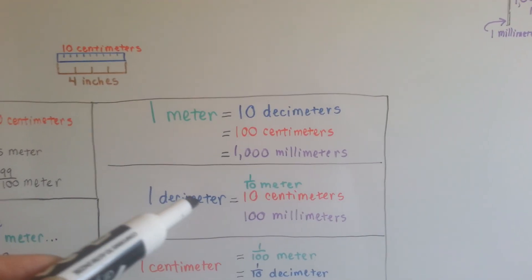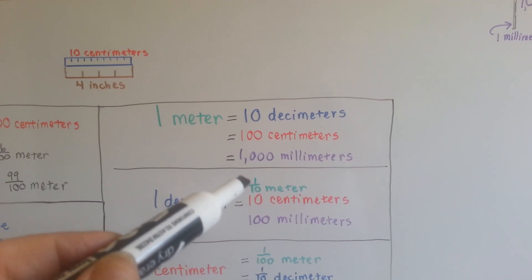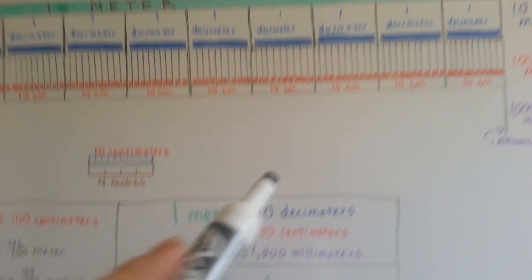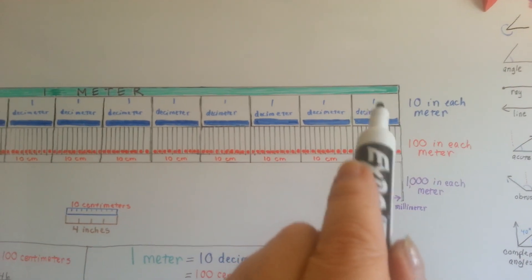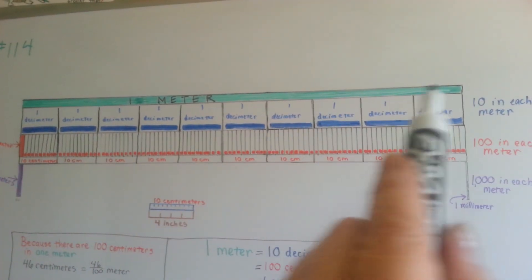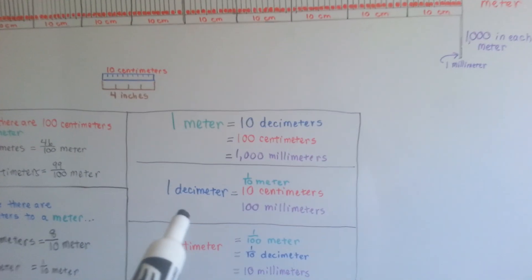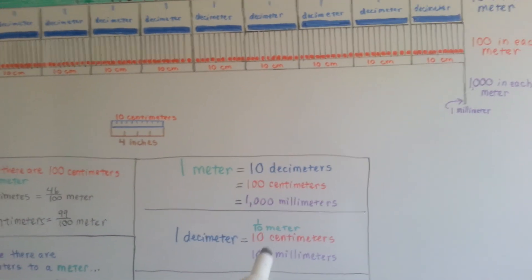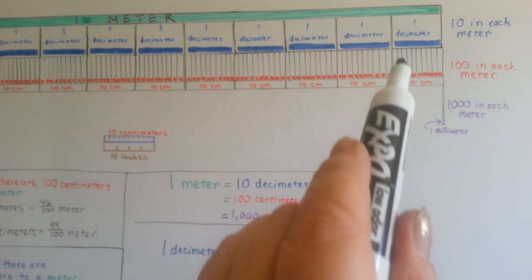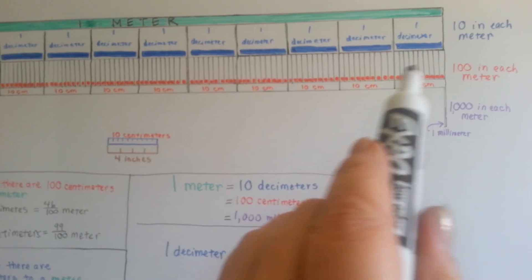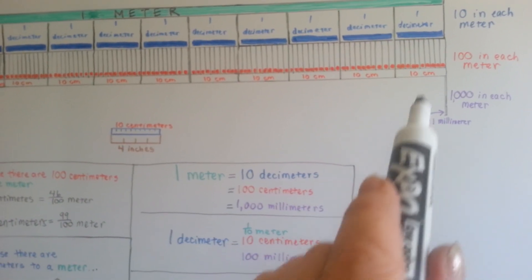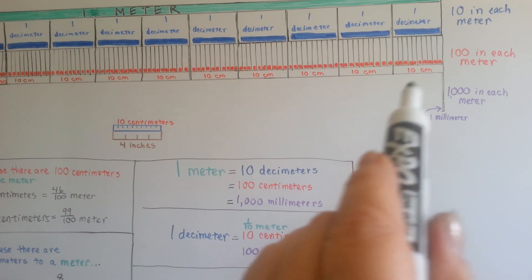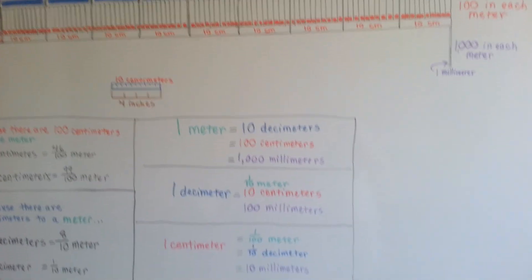If we move to decimeters, it would be one-tenth of a meter. One of these blue decimeters is one-tenth of the green meter. So it would be ten centimeters and a hundred millimeters. One decimeter is ten centimeters, and it would be a hundred millimeters squeezed inside of this space right here.